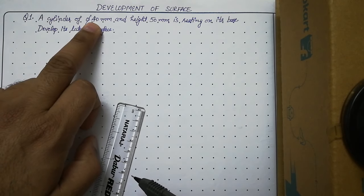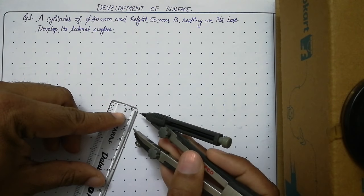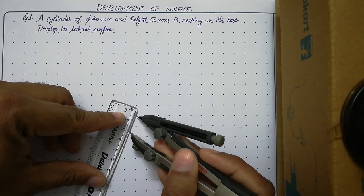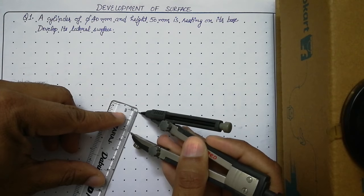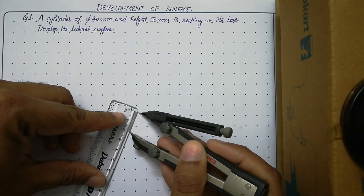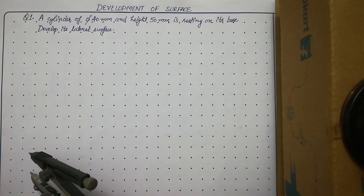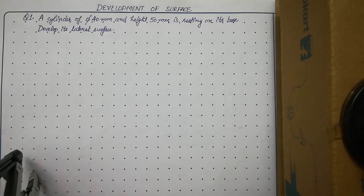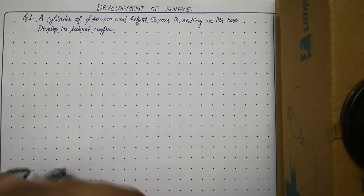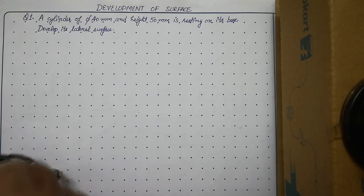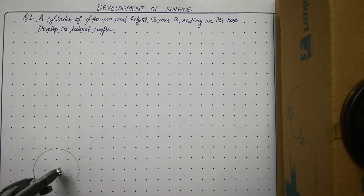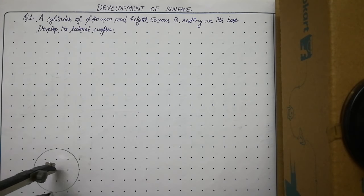The diameter of the cylinder is 40 mm. Open the compass to 20 mm in order to draw its top view, which is a circle. Place your compass on a particular point and draw a circle of diameter 40 mm — draw it thick.